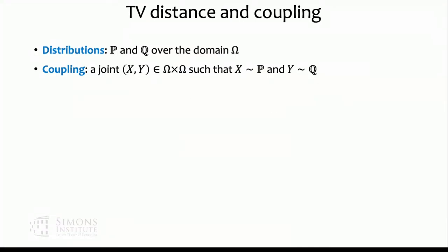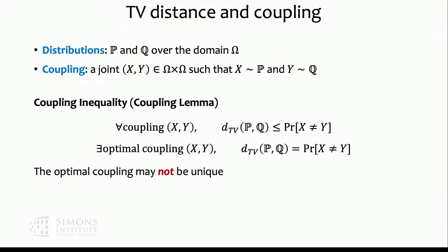This is the minimum probability achievable among all couplings. In general, the coupling inequality states: for any two distributions p and q, for any coupling, the probability of x ≠ y is at least their total variation distance. Furthermore, there exists an optimal coupling achieving equality — such optimal coupling may not be unique, but always achieves this equality.